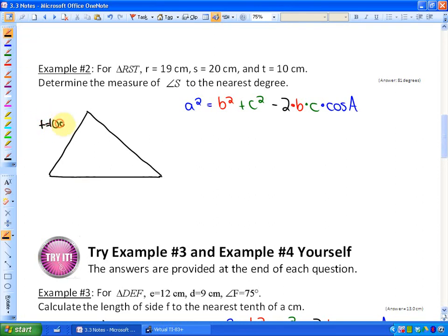So I'm going to call these here, side t, I'm going to call this 10 centimeters, that's my shortest side, side r 19 centimeters, and side s is equivalent to 20 centimeters. So their opposite angles would be the uppercase equivalent, so that would be triangle RST. Determine the measure of angle S to the nearest degree.